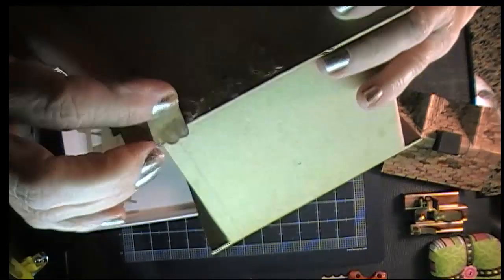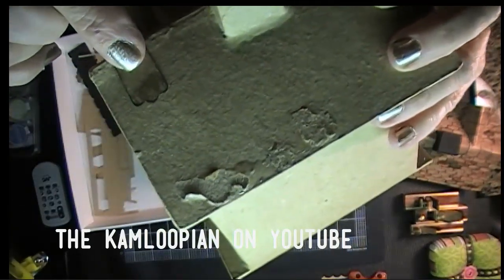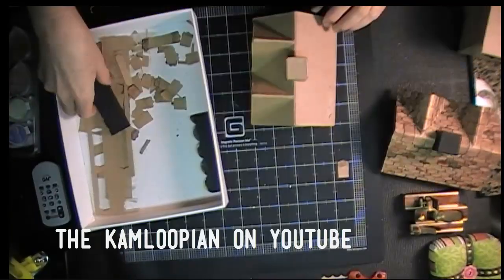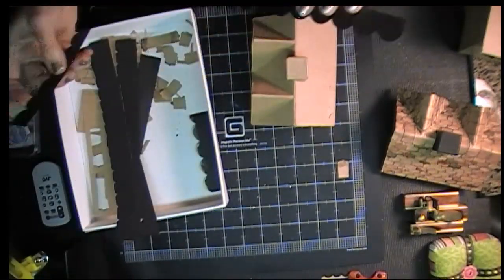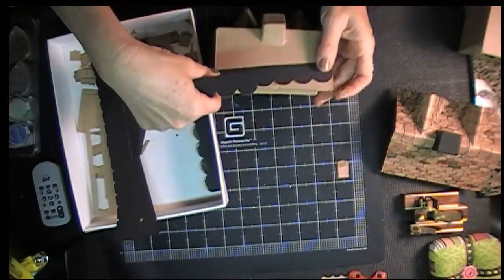Before I came across the Kamloopians great video on how he does his miniature roofs, I tried a few different things. One of those was to cut out these little scallop strips on my Craft Robo.